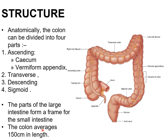The colon averages 150 cm in length. Its structure consists of four parts: ascending colon, transverse colon, descending colon, and sigmoid colon.